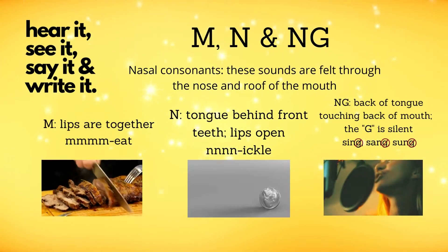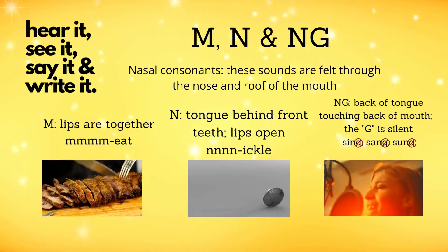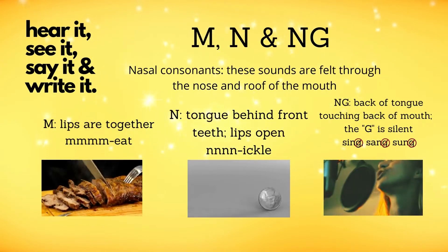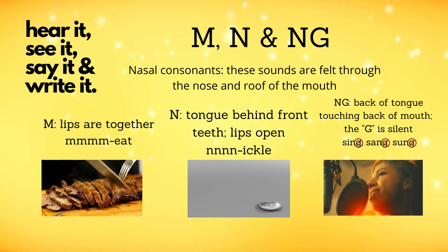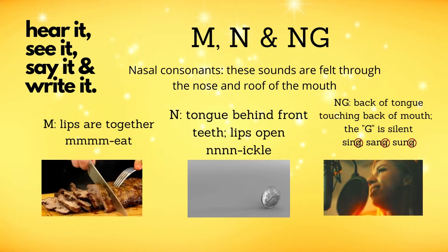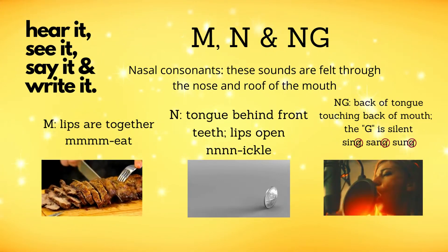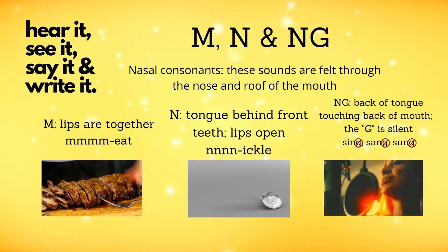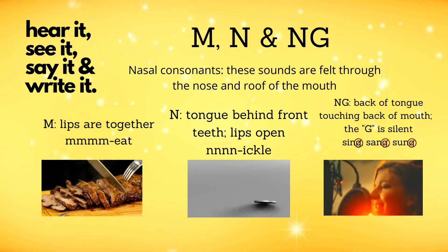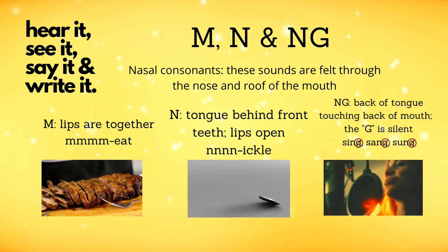The letters M, N, and NG are all nasal consonants. These sounds are felt through the nose and the roof of the mouth. M sounds like this — M, as in the word meat. Your lips are pressed together but you can feel the sound through your nose and the roof of your mouth. N — the tongue is behind the front teeth and the lips are open, as in the word nickel. The NG sound is made at the back of the mouth with the back of the tongue touching the back of the mouth. The G is silent, as in the words sing, sang, sung.